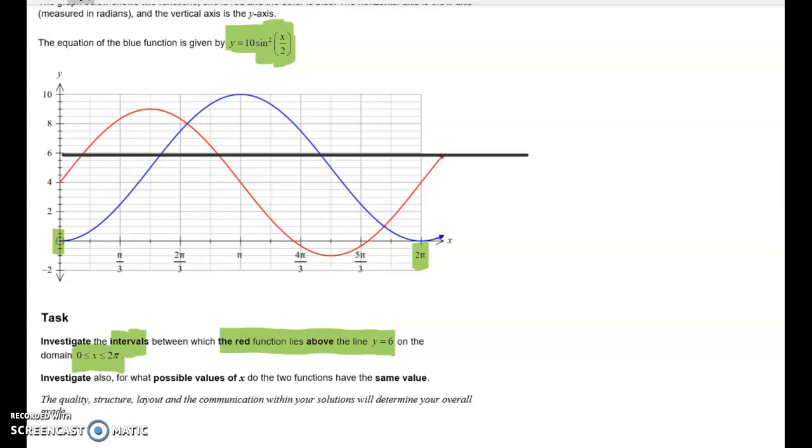Okay, so there's my line. We're looking at the red function, not the blue function, and we want to figure out where is the red function above the line y equals 6. So it's going to be between those two points, and I'm going to take above to mean strictly above.